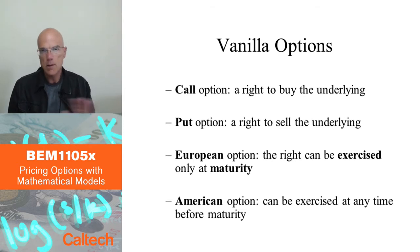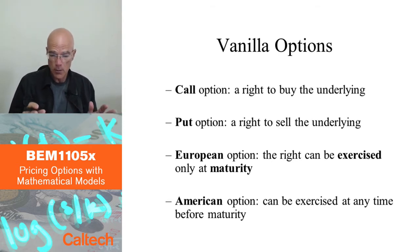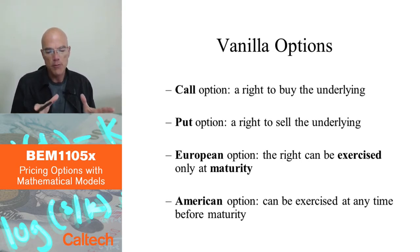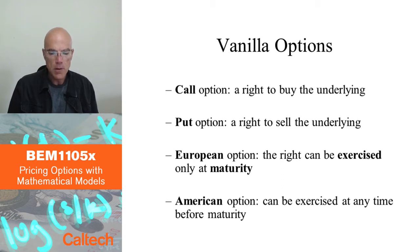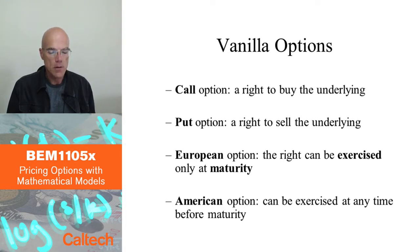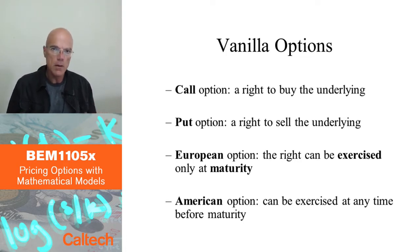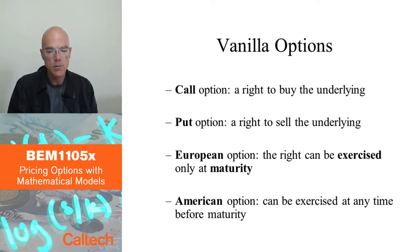American options can be exercised at any time. There is also something called Bermudan options, in which you can exercise the option at some specific time intervals during the lifetime of the option — but that's more exotic, it's not standard. Many, if not most, options are American. We are mostly going to discuss European versions because you have the Black-Scholes formula and they are easier. American options typically have to be computed numerically. We will discuss that too, but we will mostly stick to European options.